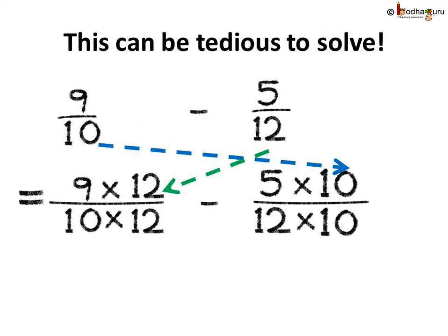But this method of multiplying each fraction with the other's denominator to get a common denominator can be very tedious sometimes. Like when we subtract 5 by 12 from 9 by 10, we cannot convert 10 into 12 by multiplying it with any whole number. And if we try to multiply 10 by 12 or 12 by 10, then large numbers need to be multiplied, like 9 by 12, 10 by 12, etc. Is there any easier way to do it?